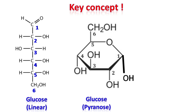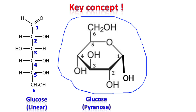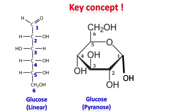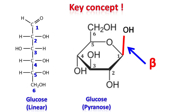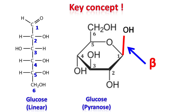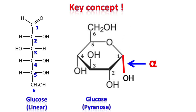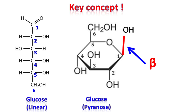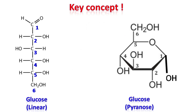If you have a structure of glucose, glucose would look something like this. This is the alpha glucose, while this is the beta glucose.